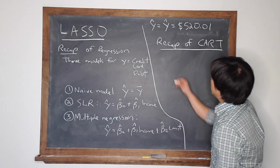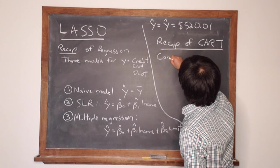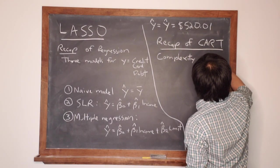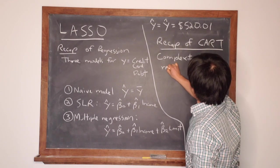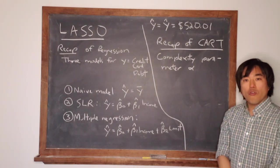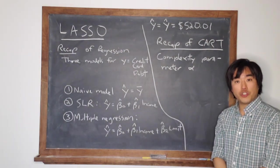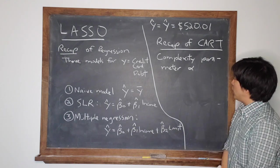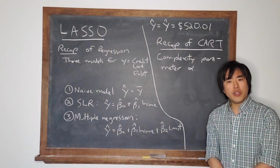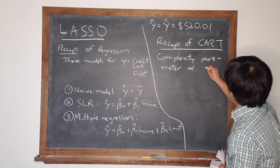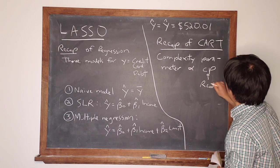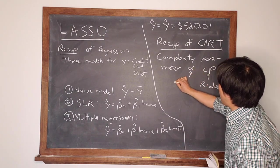Complexity parameter alpha. Remember that the shape of the tree depended entirely on the value of alpha. And when we coded this in R, I believe the value was CP. So remember, CP is R code, whereas alpha is just generic notation.